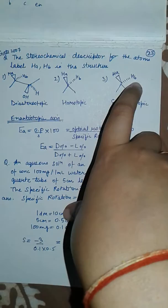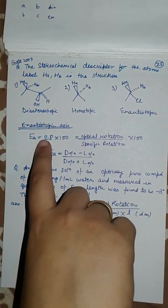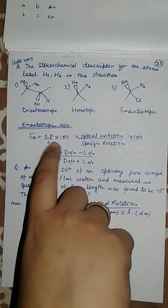Now enantiomeric excess: the formula is optical rotation upon specific rotation times 100, or D percentage minus L percentage upon D percentage plus L percentage.